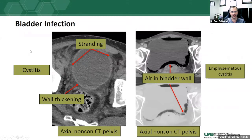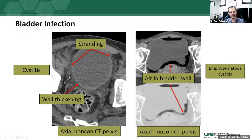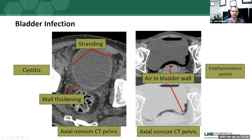Moving on to bladder infection — what does cystitis look like? On a non-contrast CT of the pelvis, typical cystitis shows stranding surrounding the bladder and bladder wall, with wall thickening as seen in inflammation elsewhere in the body. This is pretty typical uncomplicated cystitis, which can be infectious, from radiation, or from any number of causes.